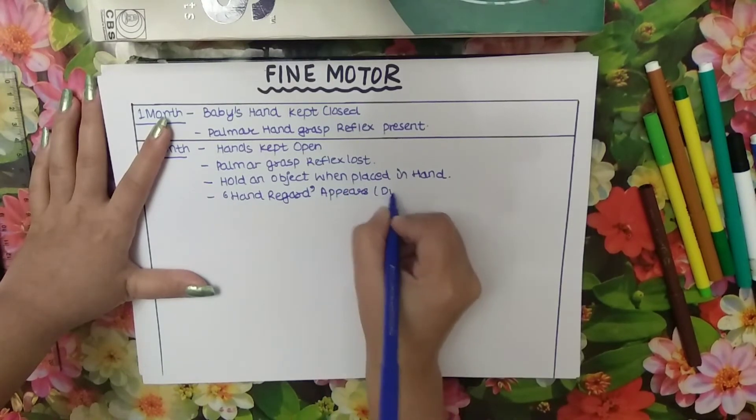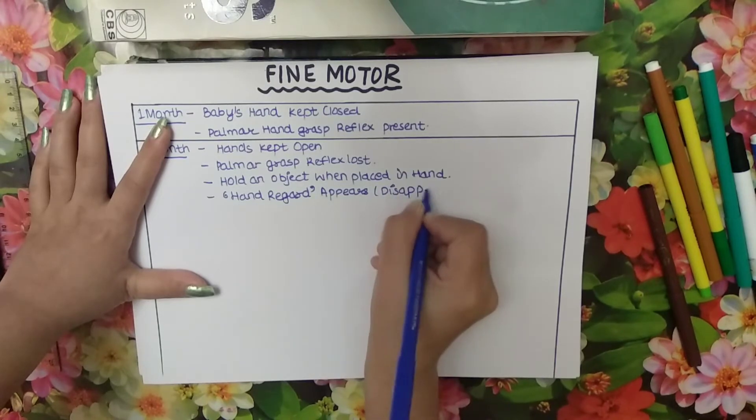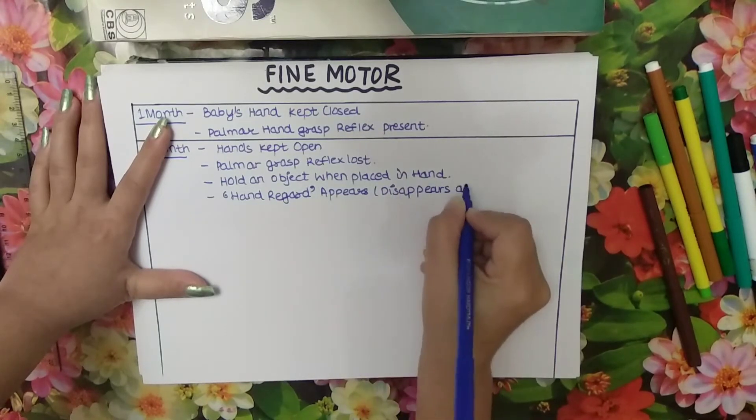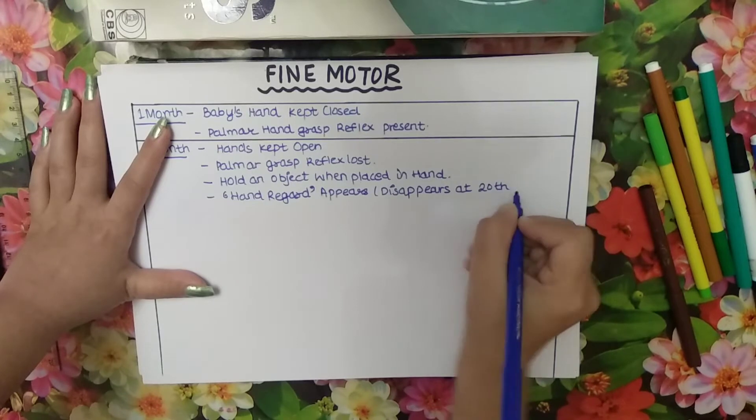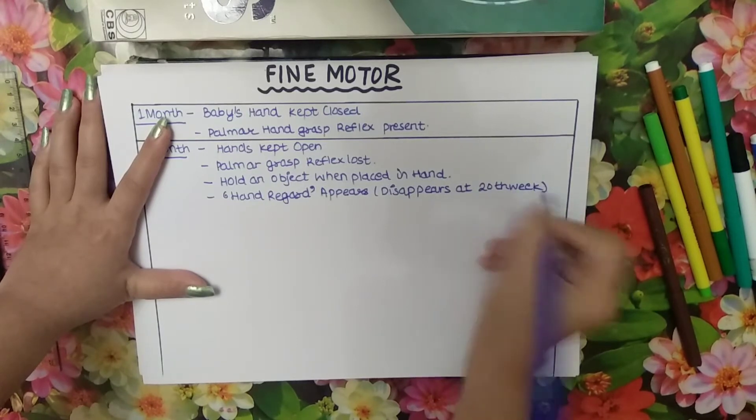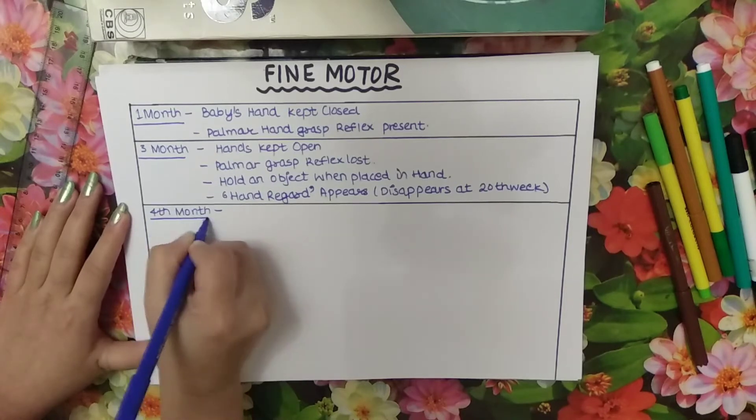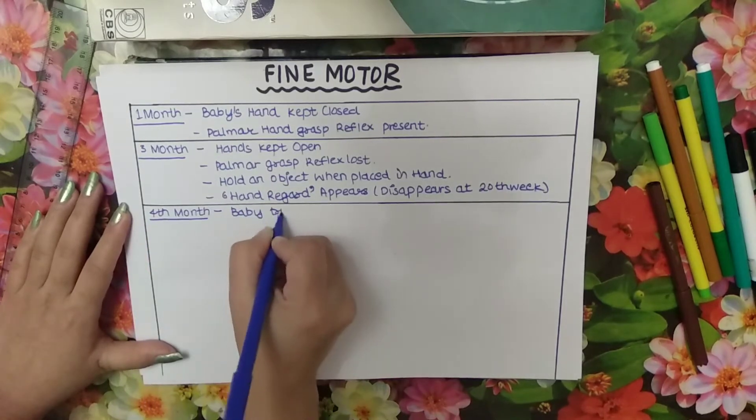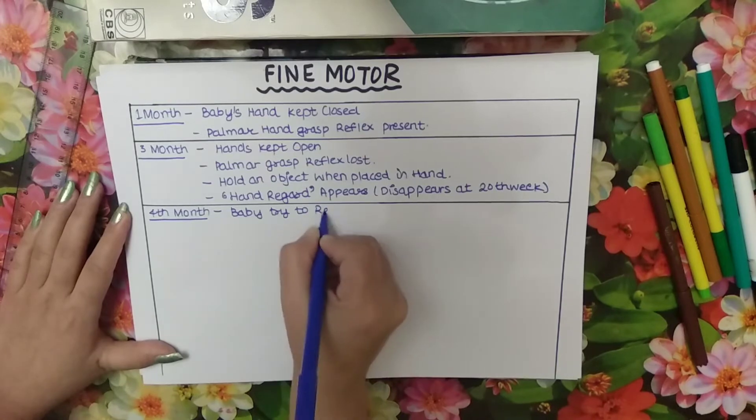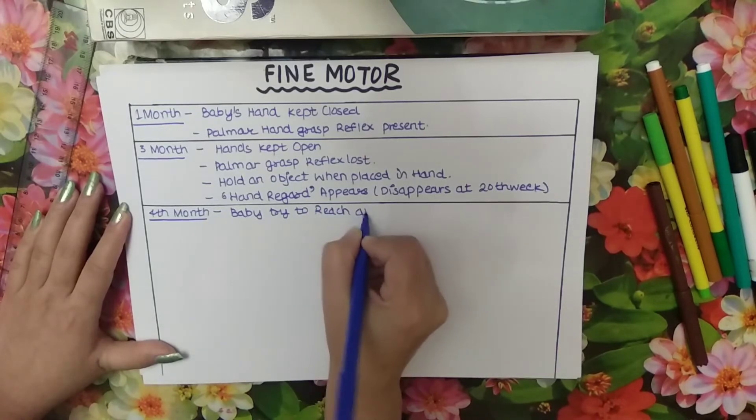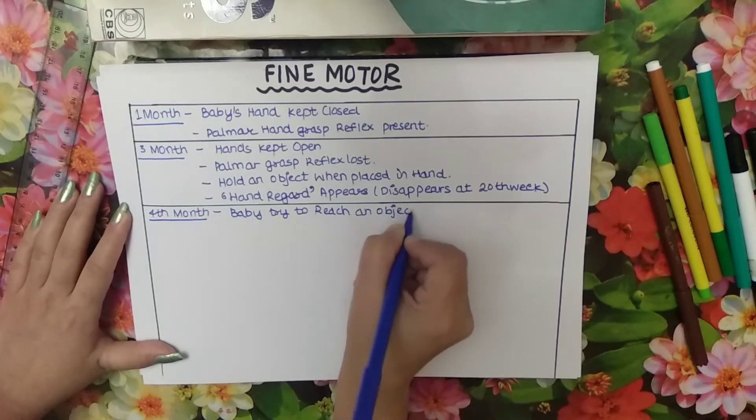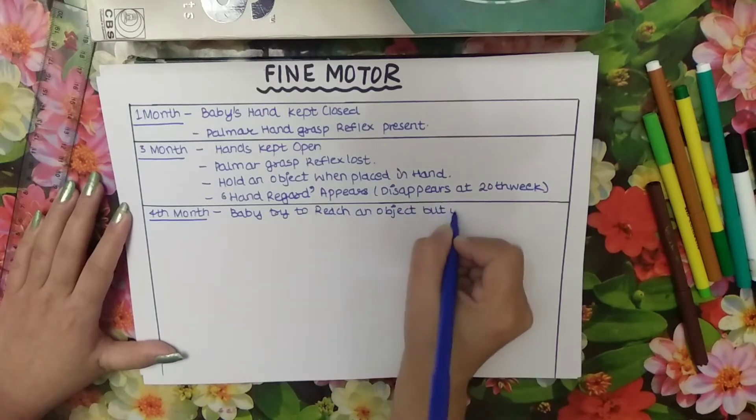In fourth month baby try to reach an object but it overshoots.